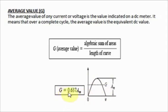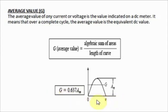So G = 0.637 × AM, where AM is the amplitude or peak value. For example, if the peak value is 10, you multiply 10 by 0.637 to get the average value. If the peak value is not given, use the area formula instead.